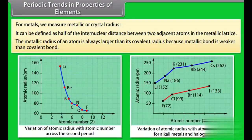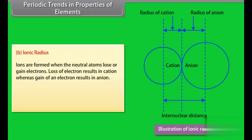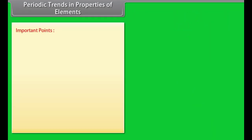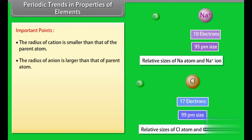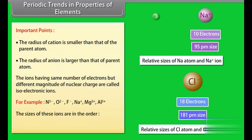Ionic radius: Ions are formed when neutral atoms lose or gain electrons. Loss of an electron results in a cation, whereas gain of an electron results in an anion. Ionic radius may be defined as the effective distance from the nucleus of the ion to the point up to which it has an influence in the ionic bond. The radius of a cation is smaller than that of the parent atom. The radius of an anion is larger than that of the parent atom. Ions having the same number of electrons but different nuclear charge are called isoelectronic ions.